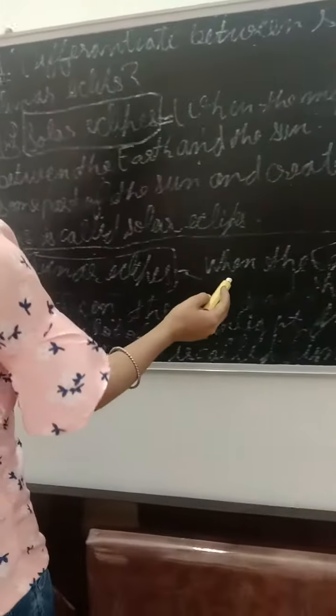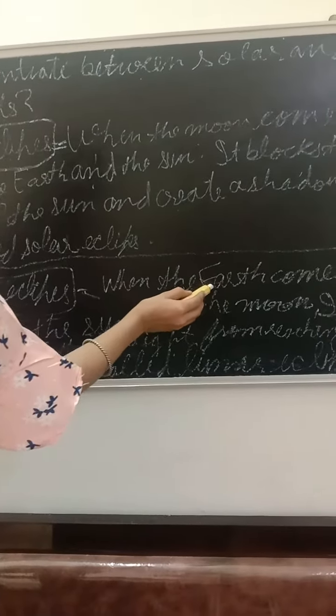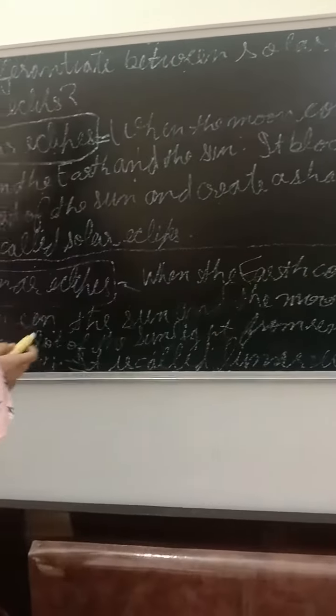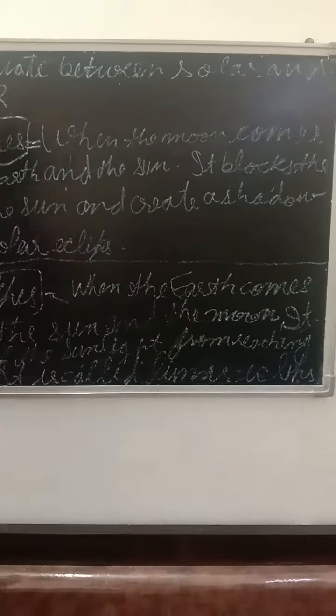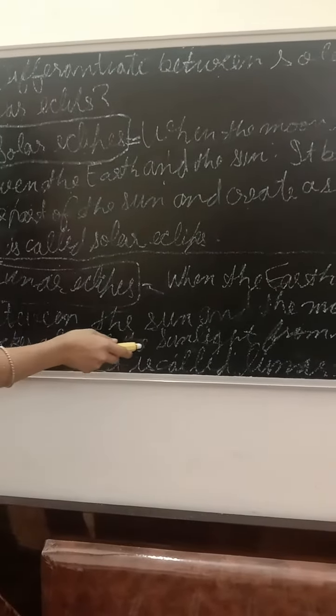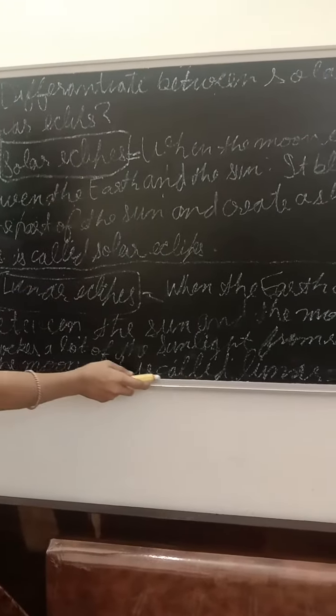And second, lunar eclipse: When the earth comes between the sun and the moon, it blocks a lot of the sunlight from reaching the moon. This is called lunar eclipse.